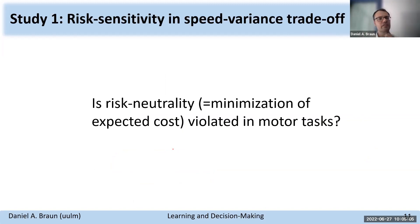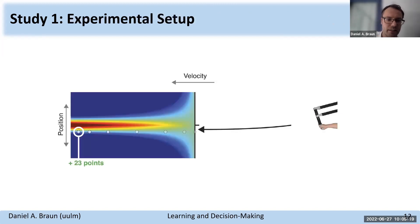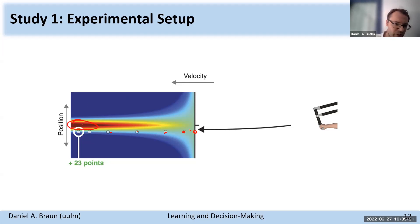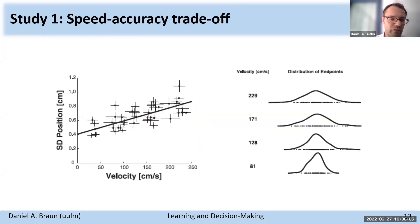We looked for evidence of deviation from expected utility decision-making in human motor control. In one of our first studies, subjects moved a manipulandum to hit a target line. Once they hit that line with a certain velocity, a simulation showed a ball moving forward — the harder and more central the hit, the higher the reward. This created a speed-accuracy tradeoff: the harder you hit, the higher the variance in your position. We used two different reward functions — one that fell off linearly and one quadratically — and paired these with an affine transformation, since utility functions are invariant under linear affine transformation.